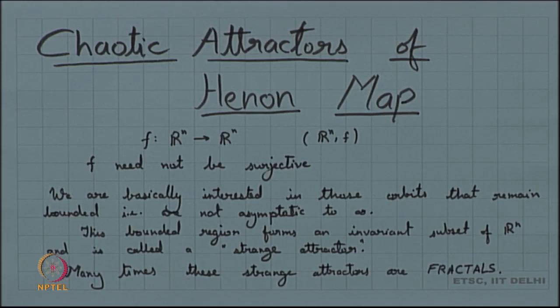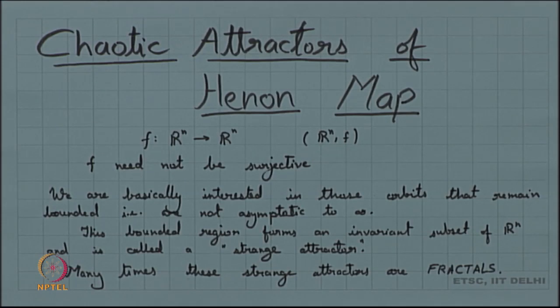That is another way of looking into attractors — looking into what fractals the dynamical system generates. Fractals are geometric structures, and it depends on the geometry of the object. When you look into strange attractors, they are analytically chaotic, but if you look at them geometrically they would be fractals. This is one aspect of study we are not going into today.